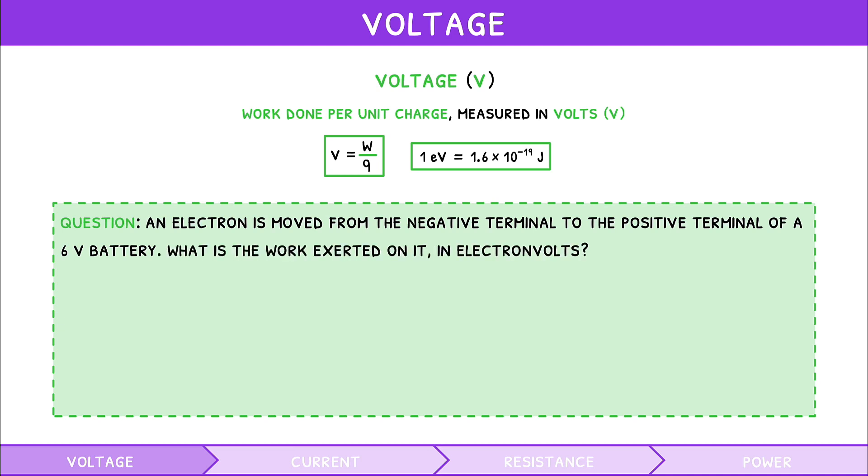The long solution is to use the equation voltage equals work divided by charge, then substituting in the values for voltage and electron charge, solving for work, and converting to electron volts. This gives the work performed as 6 electron volts. The short solution is realizing that moving 1 electron through 1 volt is 1 electron volt, so moving 1 electron through 6 volts is 6 electron volts. This is a useful exam trick for any question like this.